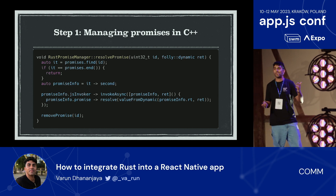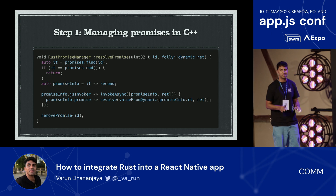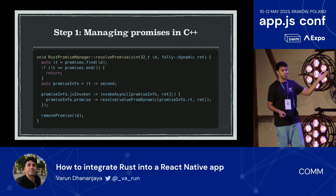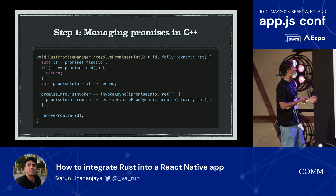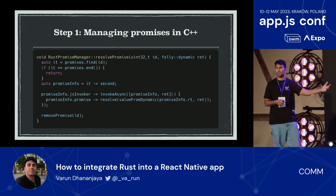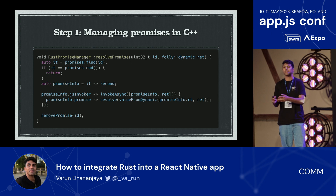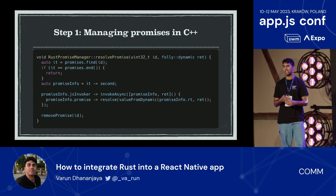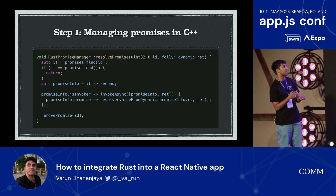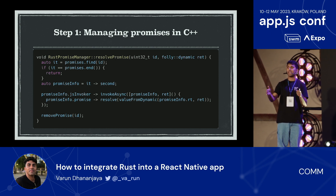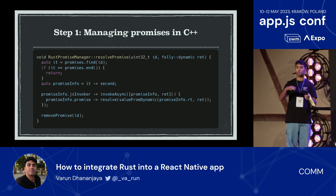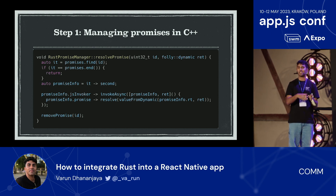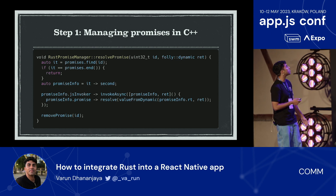So how do we actually integrate Rust into our React Native project? Step one: we need a way to manage promises in C++. We pass a JavaScript promise to C++ easily with JSI, but passing that promise to Rust is harder due to limitations of CXX and the Rust borrow checker — it can't be sure what the lifetime of that reference is. So we use indirection: manage the promise on the C++ side, create a map of IDs to promises, and when the Rust task is complete, call a callback function passing in that promise ID, then resolve the promise on the C++ side.